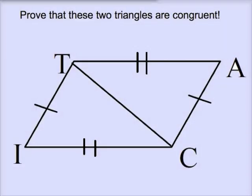So first example is we want to prove that these two triangles are congruent. First off, let's figure out which triangles we're talking about. So let's name them.